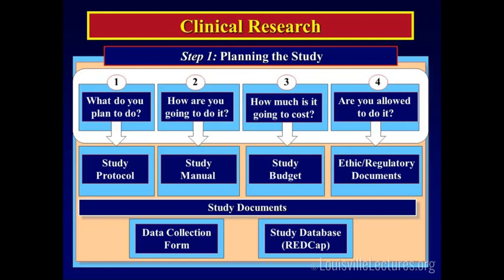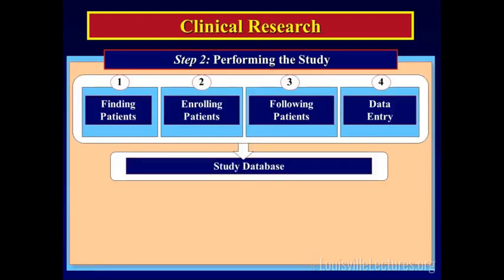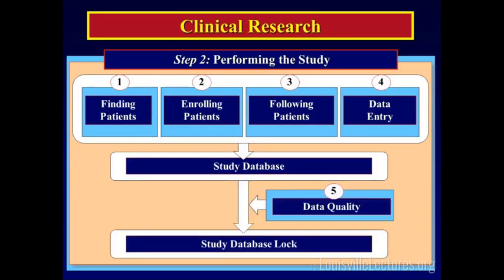All of this is in the planning of the study — a lot of work. Once the planning is finished and everything is approved — protocol approved, database in place — we move to performing the study. Performing the study: if it's a prospective study, we find the patients, enroll them, get consent if needed, follow patients, do data entry, and everything goes into the database. In this process, there is a critical aspect: data quality — being sure your data is solid. After some period of time we lock the database and finish performing the study.